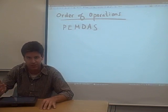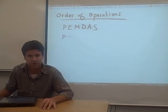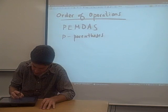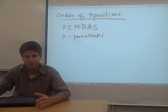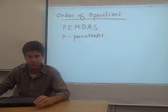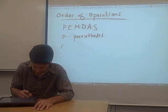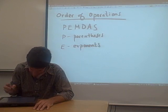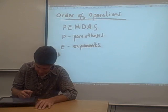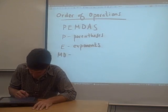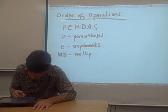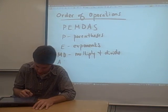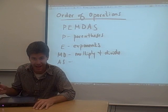Now each of these letters stands for something and gives us the order of operations. P stands for parentheses. E stands for exponents. The M and the D kind of go together. They stand for multiply and divide. The A and the S go together as well. They stand for add and subtract.